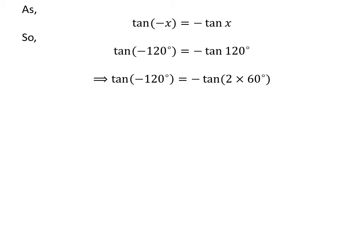As 120 degrees is equal to 2 times 60 degrees, so tangent of minus 120 degrees is equal to minus tangent of 2 times 60 degrees.